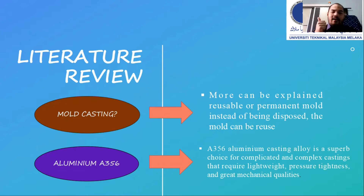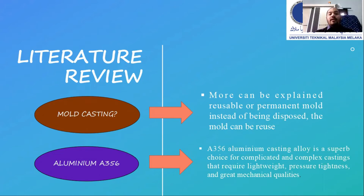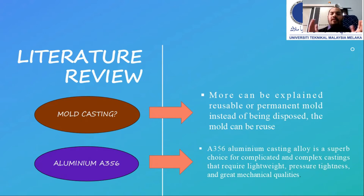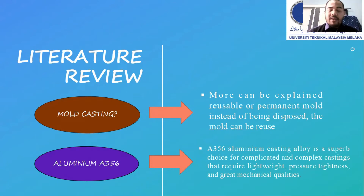Aluminum A356 is selected because of its strength, fluidity, usability, and machinability. It is a superb choice for complicated and complex castings that require lightweight, pressure tightness, and great mechanical qualities. The high quality of aluminum A356 makes it better than other materials. In industry manufacturing, aluminum A356 is widely used because it is a long-term material with strong qualities that can be applied to many products and machines in the manufacturing industry.